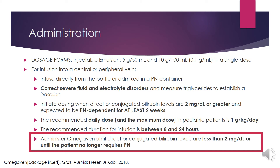The recommended dosage depends on age, energy expenditure, clinical status, body weight, tolerance, ability to metabolize, and consideration of additional energy sources given to the patient. The recommended daily dose, which is also the maximum dose in pediatric patients, is 1 g/kg/day. The recommended duration for infusion is between 8 and 24 hours depending on the situation. Administer Omegaven until direct or conjugated bilirubin levels are less than 2 mg/dL or until the patient no longer requires parenteral nutrition.